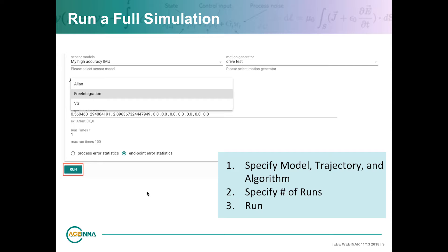Once you have a motion command file, you're ready to run the simulation. In running the simulation, you specify the sensor model, the trajectory, and the algorithm. We offer a number of default algorithms. If you use our command line tool, you can integrate your own algorithm very easily. Behind the web version is a set of Python tools called GNSS-INS-SIM, available on our GitHub. You can download that and use it directly for even deeper customization of the simulation.